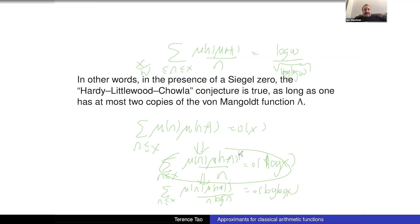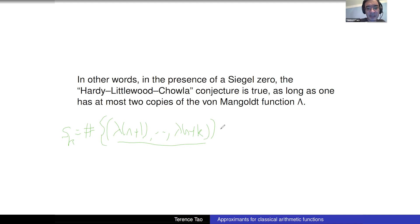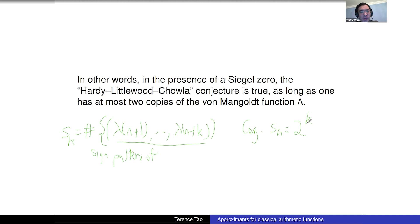[Q&A] Question about complexity of the Liouville function: define S_k as the number of sign patterns that (λ(n+1),...,λ(n+k)) attains. Conjecturally S_k = 2^k — if the Chowla conjecture is true then every sign pattern occurs equally often, so the complexity grows exponentially.